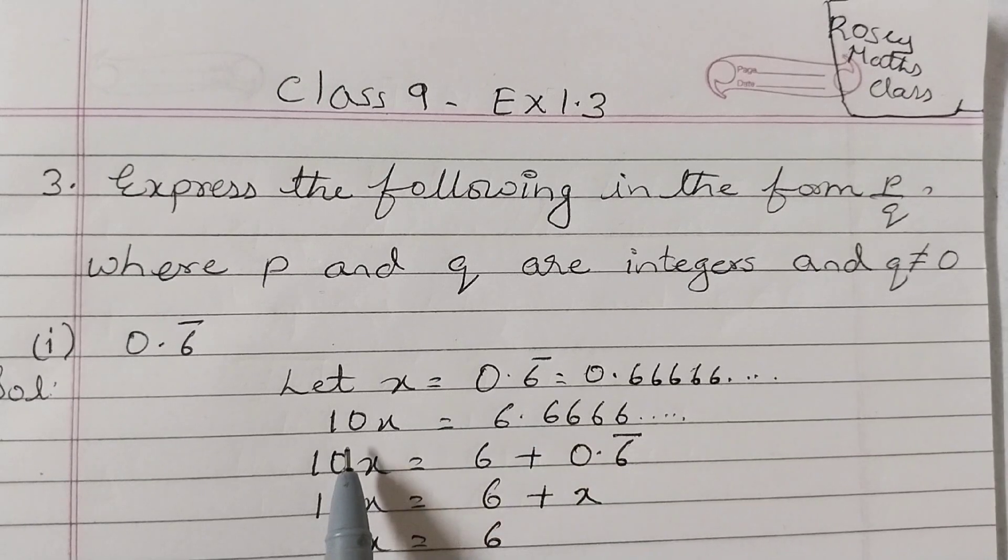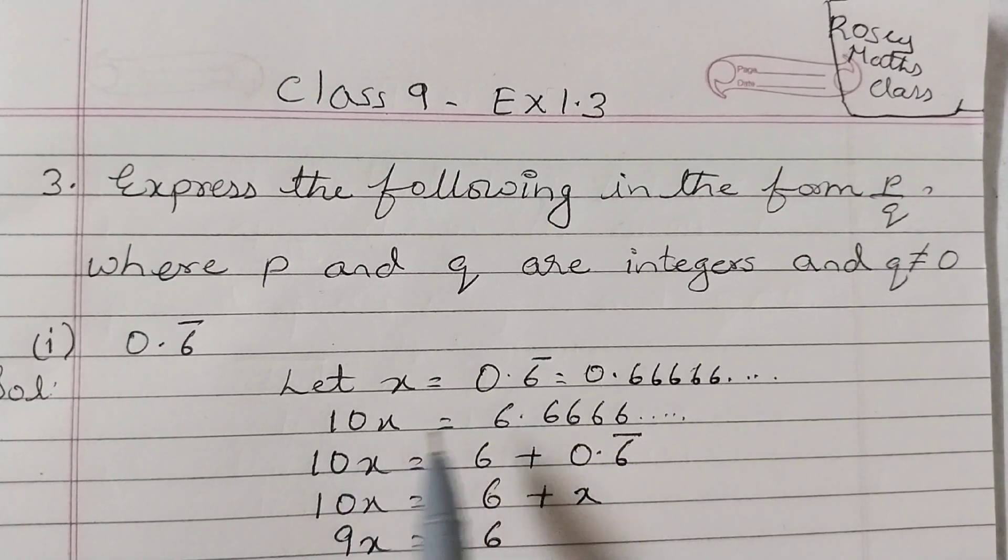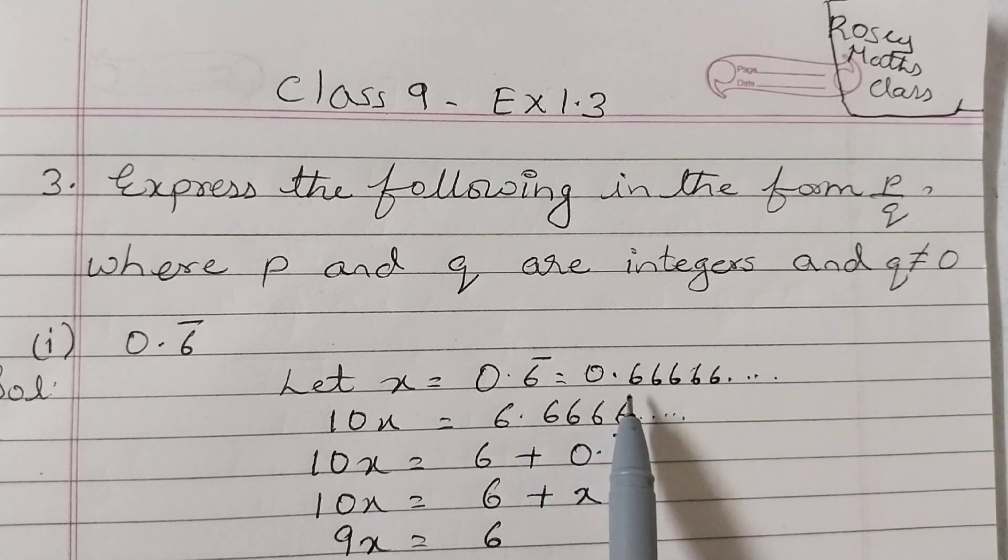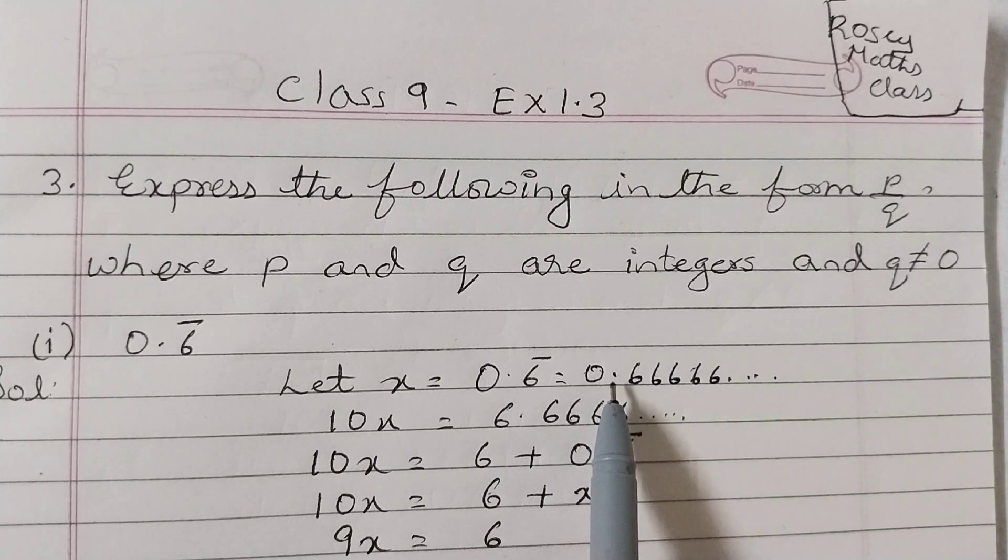So 10 into x is 10x equals to, and when we multiply this number by 10, the decimal point shifts one place to the right. So this decimal point from here will move to here, so it will become 6.6666...